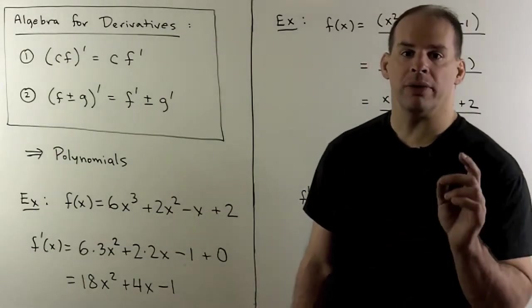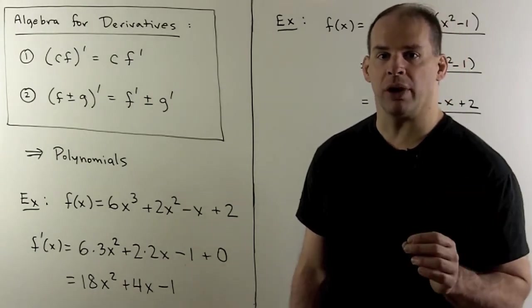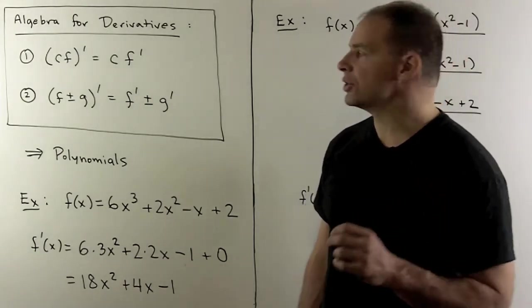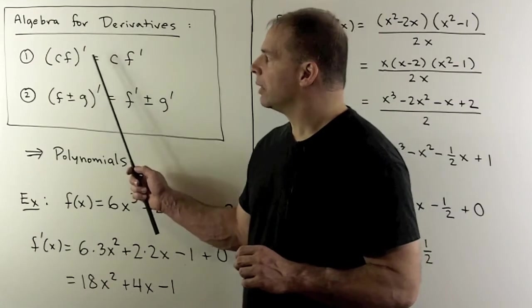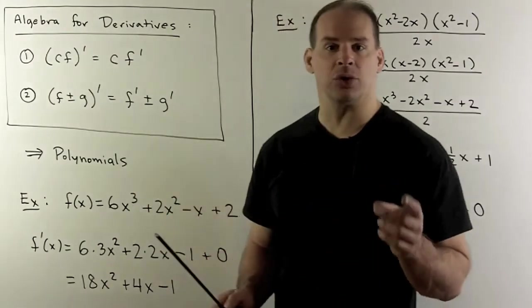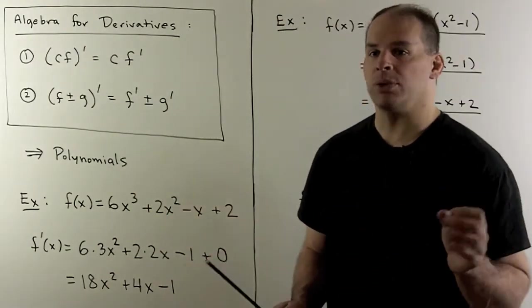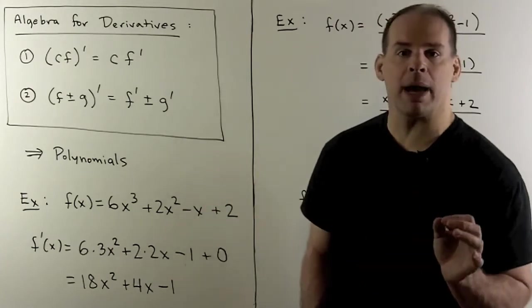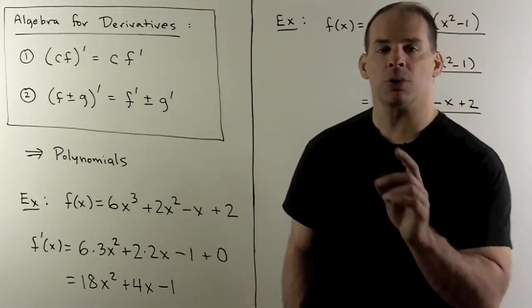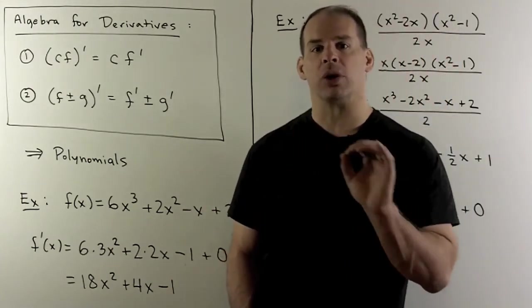For the next step, we have the following two rules for manipulating derivatives. First, we take a function, multiply by a constant, and then take the derivative. Same as if we took the derivative of the function and then multiply by the constant. So we're allowed to pull constants out of derivatives.